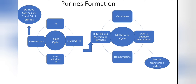For purine synthesis, when tetrahydrofolate gets its one carbon unit from tryptophan, it converts into 10-formyltetrahydrofolate, which is involved in the formation of purines — specifically becoming carbon number 2 and carbon number 8 of the purine ring. Purines use the de novo synthesis pathway, where complex molecules are built from simpler ones, and one of those simpler substances is obtained from the folate cycle as 10-formyltetrahydrofolate.